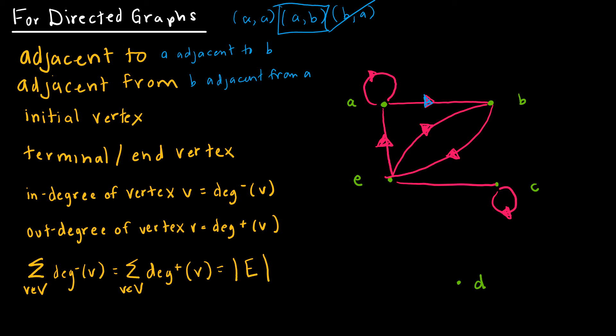Same thing for initial vertex, terminal vertex, which might be called an end vertex. Terminal vertex of that ordered pair, A, B, would be A, or I'm sorry, initial vertex would be A, because it's the one that we started from, and terminal vertex for that specific ordered pair would be B.